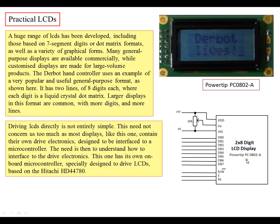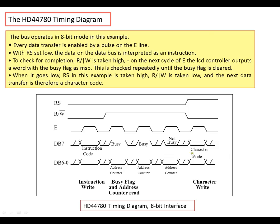Basically, LCDs come with a parallel port or a serial port. A very popular classic one is the Hitachi HD44780, controlled by either eight or four bits of data plus three control signal bits. The control signals are Read/Write (RW), E — which is basically your clock — and RS. Every data transfer is enabled by a pulse on the E line going high. With RS set low, the data on the bus is interpreted as an instruction. RS tells you whether it's an instruction or data, and RW is read high, write low.